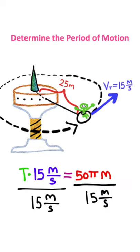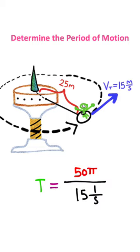Now I'm going to take this 15 meters per second and divide it on both sides of the equation, giving me this equation. Now I can take this fraction right here and flip it and bring it to the top. That will give me something that looks like this.